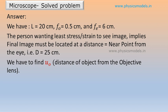capital L is the tube length, that is the distance between the objective lens and the eyepiece lens. F0 is the focal length of the objective lens, O stands for objective, that is 0.5 centimeters. Fe is the focal length of the eyepiece lens, that is 6 centimeters. And we have to find u naught, which is the distance of the physical object in the microscope from the objective lens.